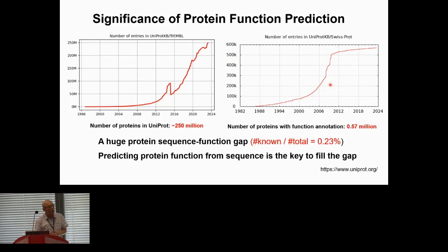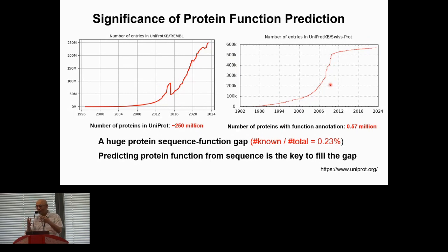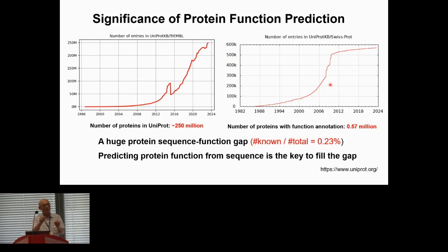We want to use pre-trained protein language models to extract features for proteins as input. As seen at this conference, protein language models are transformer-based on the self-attention mechanism, trained with self-supervised learning to predict randomly masked amino acids. They train on millions of protein sequences without labels. Once trained, they learn dependencies and interactions between amino acids through the evolutionary process, and can extract features for each amino acid for downstream tasks such as protein function prediction.